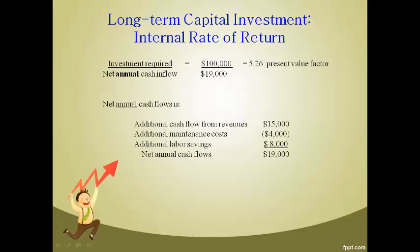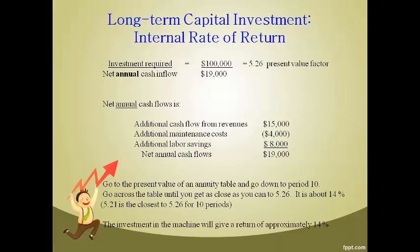The internal rate of return is computed as the investment divided by the annual cash flows. Annual cash flows are cash flows that occur each year. The formula gives a present value factor of 5.26. This is not the percent — the percent return must be determined by using the present value table of an annuity. Go down to the row for 10 periods and across the row until you get to the number closest to 5.26. This is the 14% column. A net annual cash flow of $19,000 will give a return of 14% annually on the $100,000 investment.